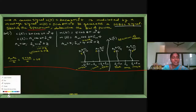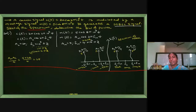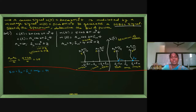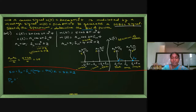For bandwidth, we take the higher cutoff frequency minus the lower cutoff frequency. The higher cutoff is 1004 kHz and the lower cutoff is 996 kHz. Bandwidth = 1004k − 996k = 8 kilohertz. Bandwidth calculation is complete.